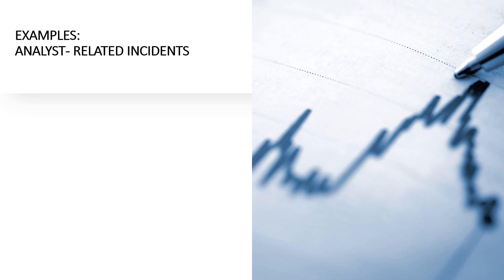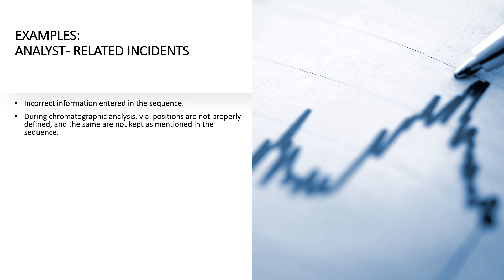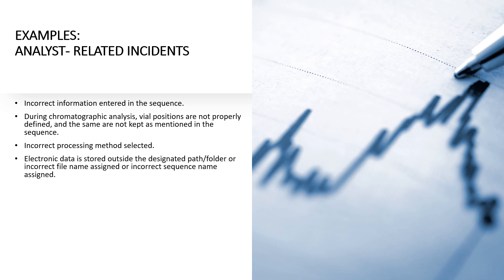Examples of analyst-related incidents include: incorrect information entered in the sequence, such as AR number, potency of standard, or label claim wrongly entered during chromatographic analysis; vial positions not properly defined and not kept as mentioned in the sequence; incorrect processing method selected during processing of chromatogram; and electronic data stored outside the designated path or folder, or incorrect file name or sequence name assigned not as per internal standard practice.